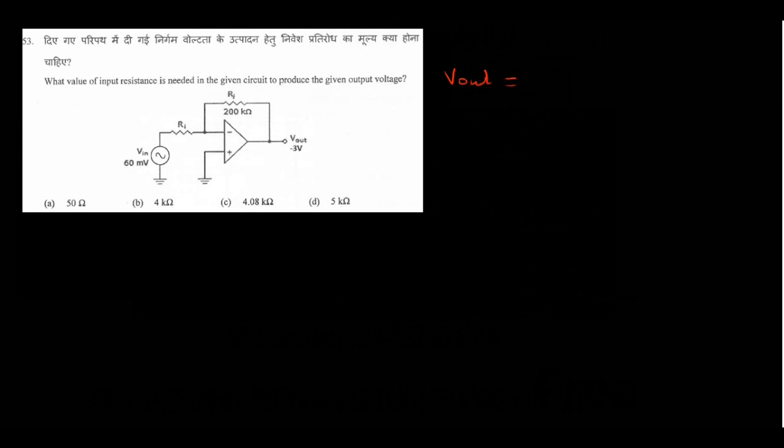Next question: what value of input resistance is needed in the given circuit to produce the given output voltage? He has given the output voltage and we have to find Ri. This is an inverting amplifier because the input is applied to the inverting terminal. Vout of an inverting amplifier is given by minus of Rf upon Ri, multiplied by V-in.